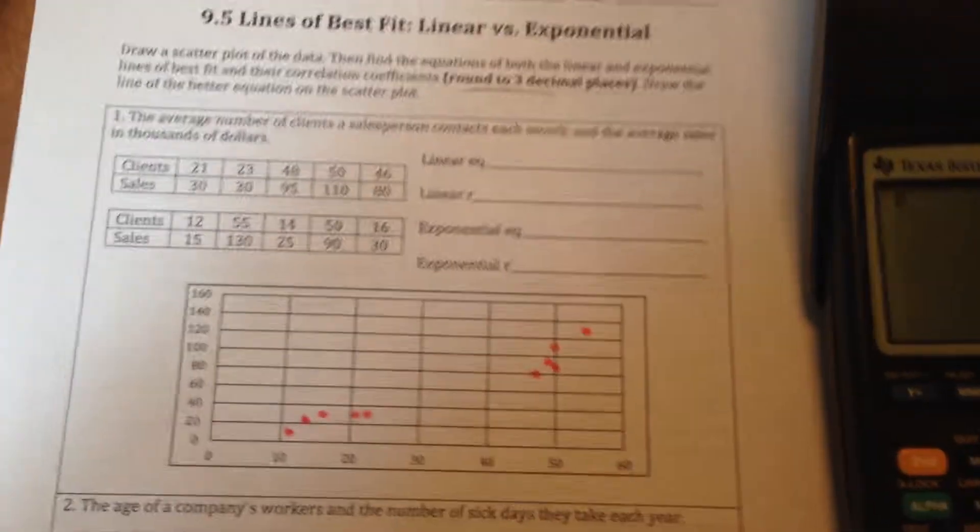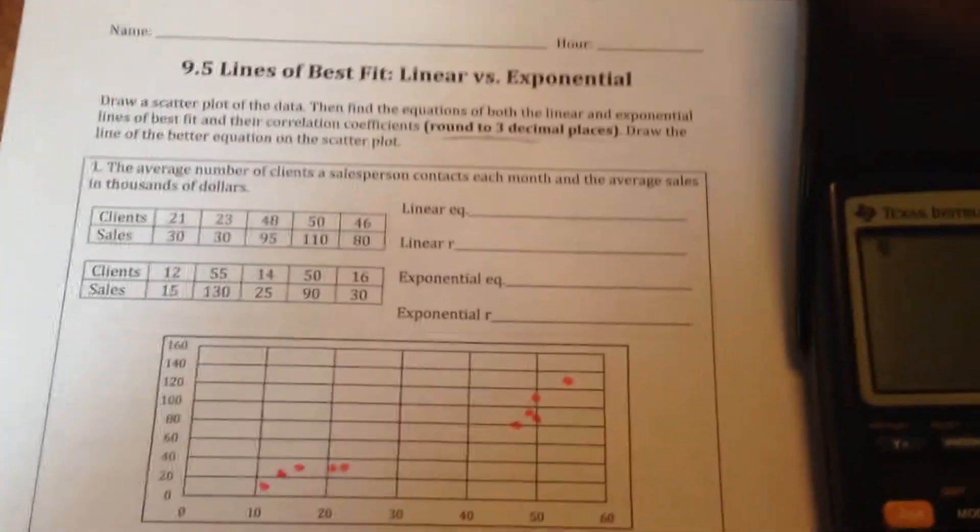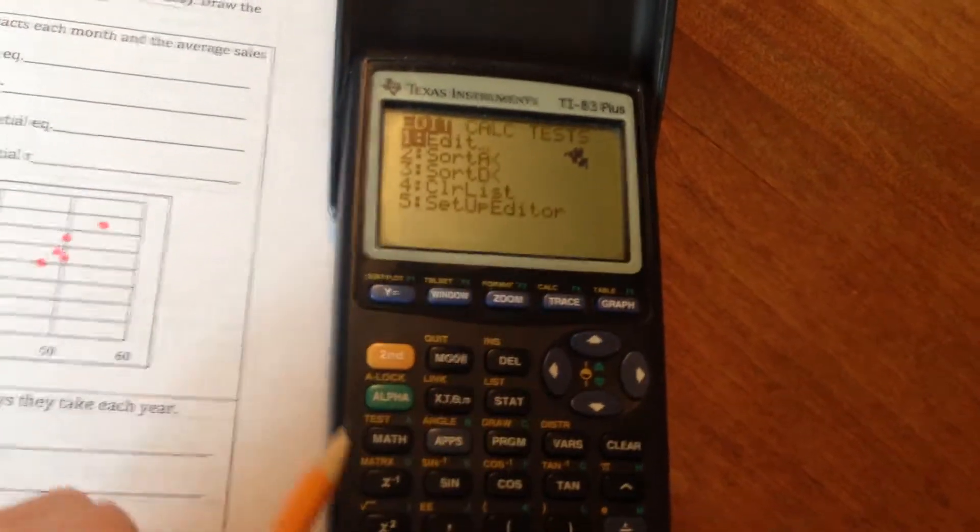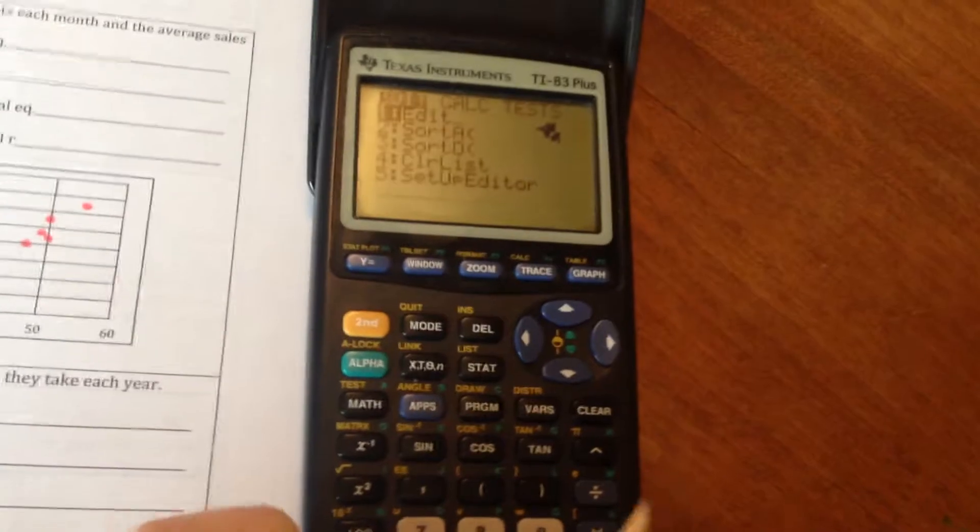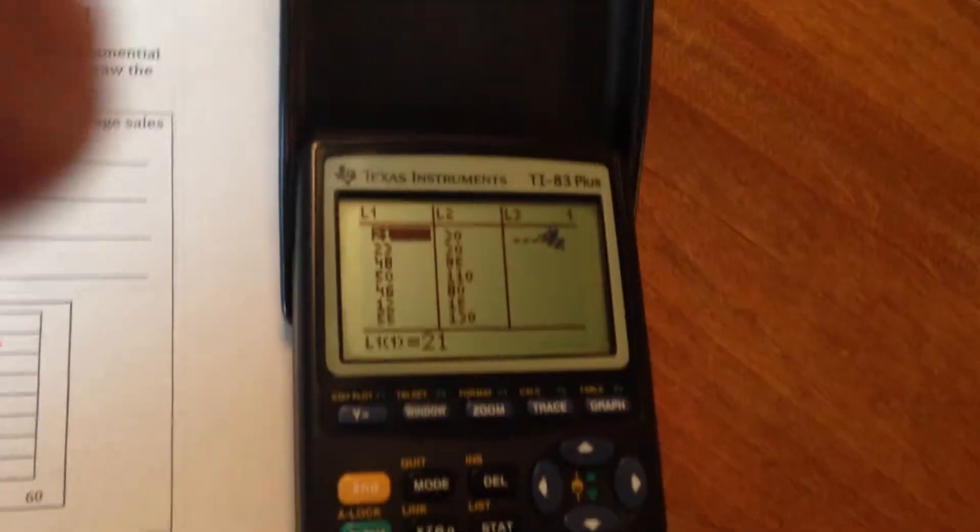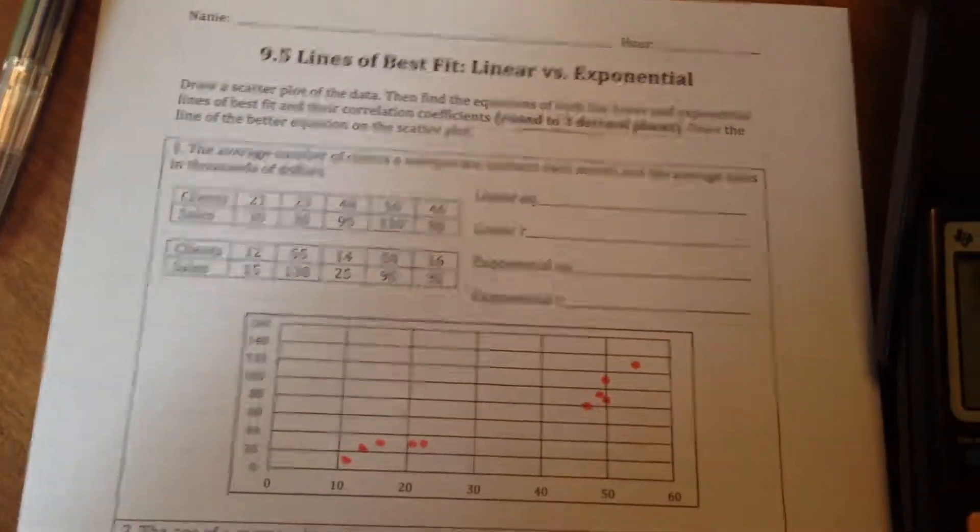Now, I've also gone ahead and typed these numbers into the calculator just to save us a headache later on. So if we go over here, just to remind you how to type it in, we want to push our stat button, and then select edit. And you can see here, I've just got all of those numbers already typed into one long line of numbers. So we've got the scatter plot created.